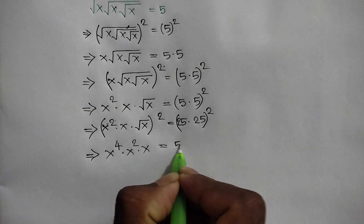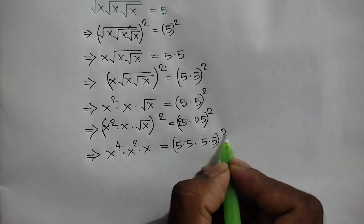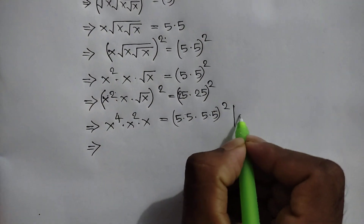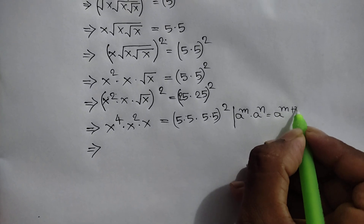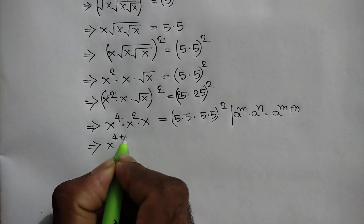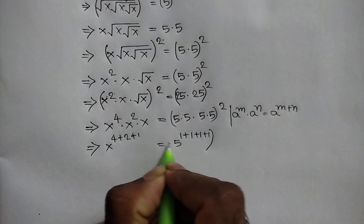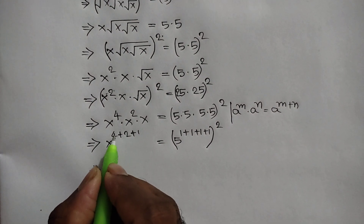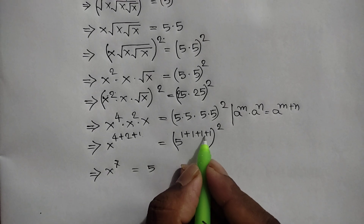We can write 25 times 25, that means 5 times 5 times 5 times 5 whole squared. Here we apply the exponents rule: a to the power m times a to the power n is equal to a to the power m plus n. Applying this rule we can write x to the power 4 plus 2 plus 1 is equal to 5 to the power 1 plus 1 plus 1 plus 1 squared.